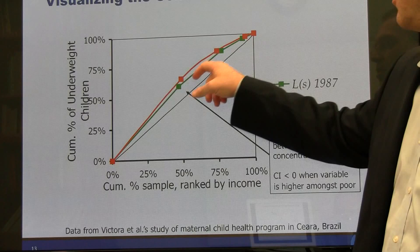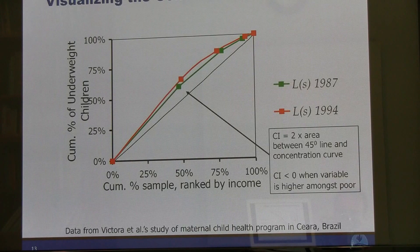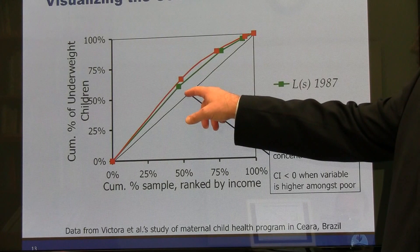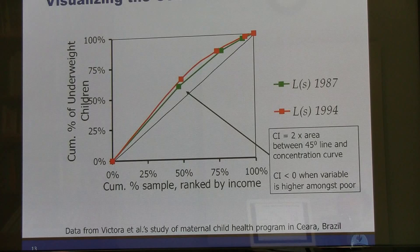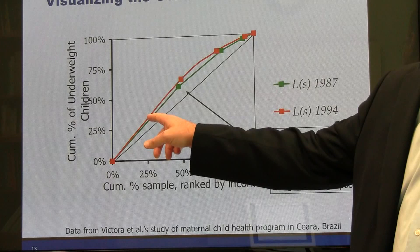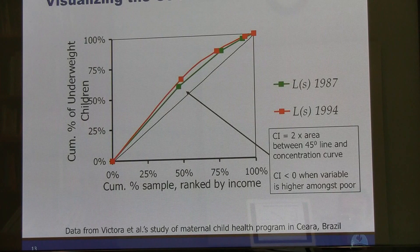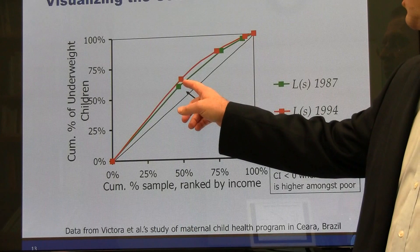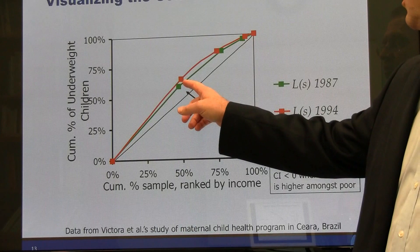The concentration curve is the actual curve, and the concentration index is two times the area between the actual curve and the equality line. It has a value between minus one and positive one, with zero being perfectly equal. If it's less than zero, the variable is more concentrated among the poor. In the Brazil data from 1987 and 1994, the poorest 25% had more than 30% of the underweight children, so it's a negative number. Between 1987 and 1994, the curve moved outward — it actually became more inequitable over time.